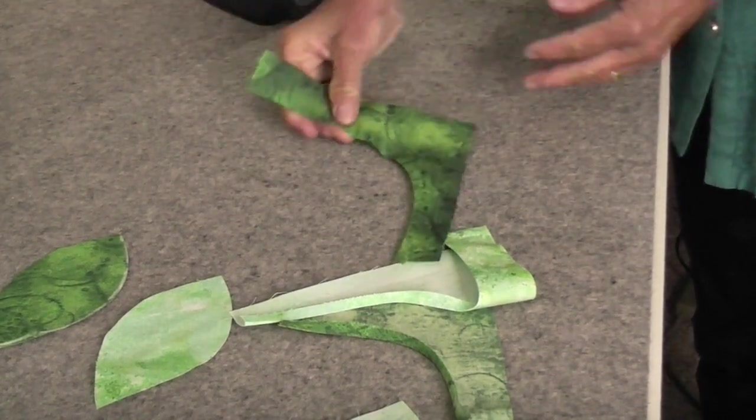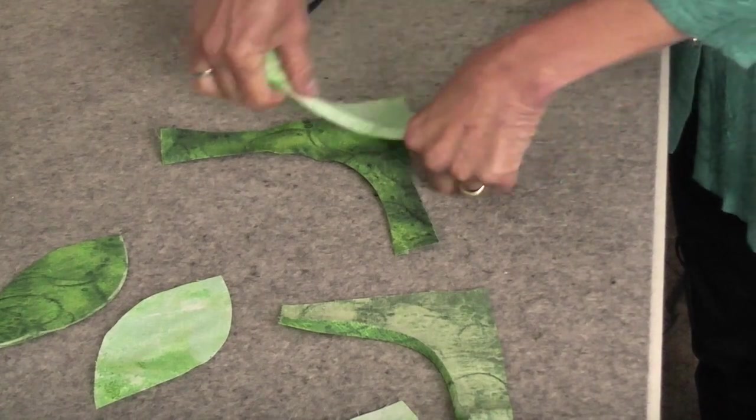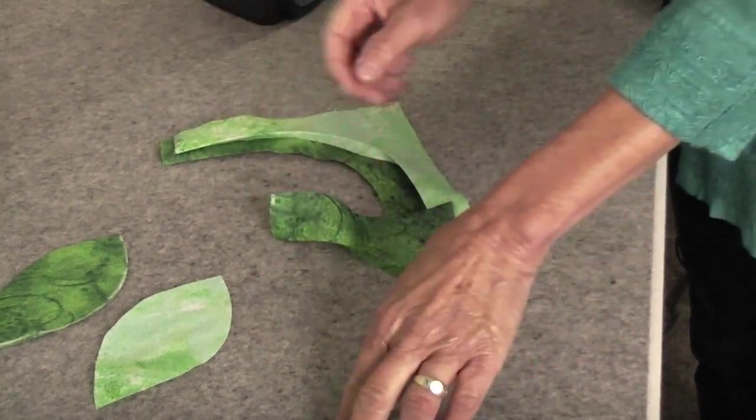We just wanted it down enough that we have a nice crisp edge on this other side. So I have one more to do, and then we're ready to put our leaf pair together. Now we're ready to take this to the sewing machine and do our top stitching.